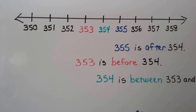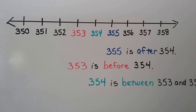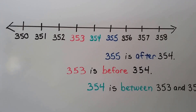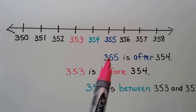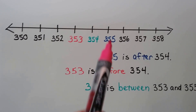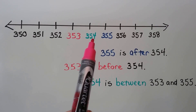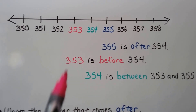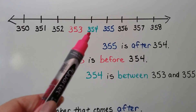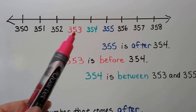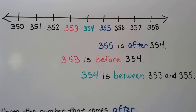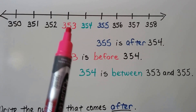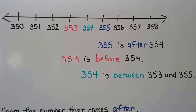Here I have a number line that starts with 350 and ends with 358. 355 is after 354 — we say this number after 354 when we count. The number 353 is before 354 — we say it before we say 354 when we're counting. 354 is in between 353 and 355; it's right in the middle.